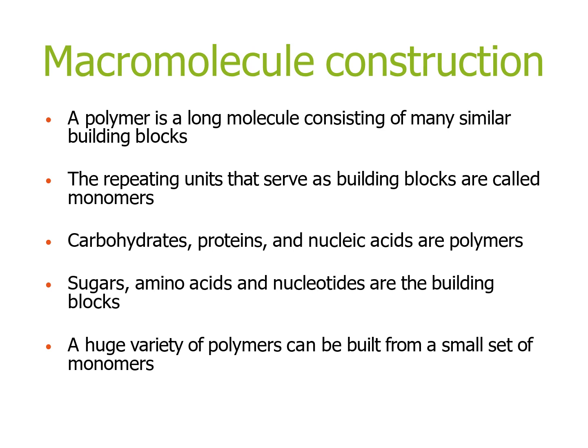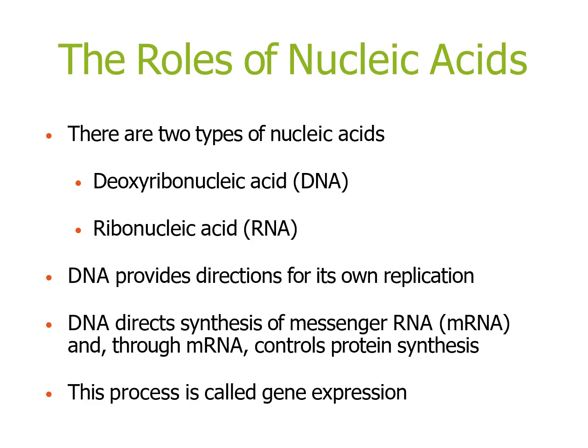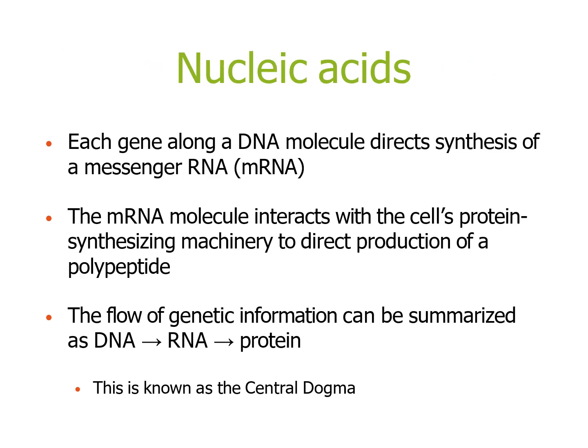Sugars, amino acids, and nucleotides are the building blocks, and a huge variety of polymers can be built from a small set of monomers. There are two types of nucleic acids: DNA, which is deoxyribonucleic acid, and RNA, which is ribonucleic acid. DNA provides direction for its own replication. It directs the synthesis of mRNA — messenger RNA — and through mRNA controls protein synthesis. This whole process is called gene expression. The flow of genetic information can be summarized as DNA goes to RNA goes to protein, and this is known as the central dogma.